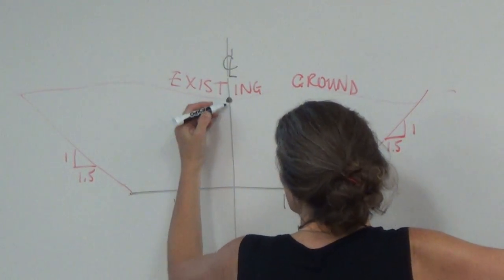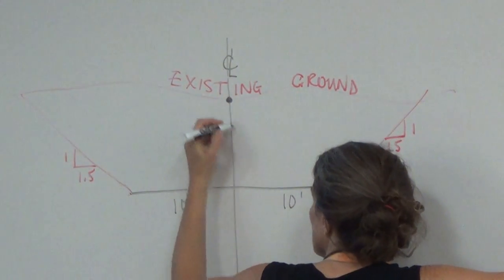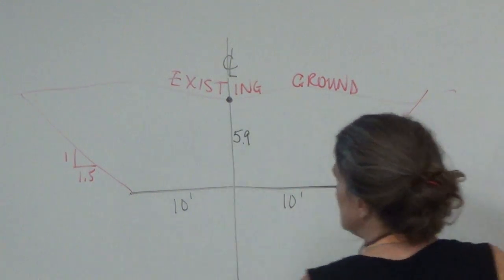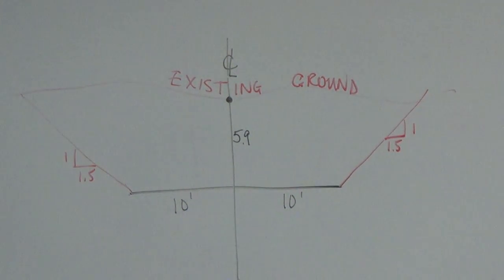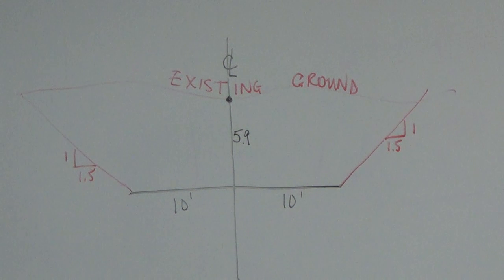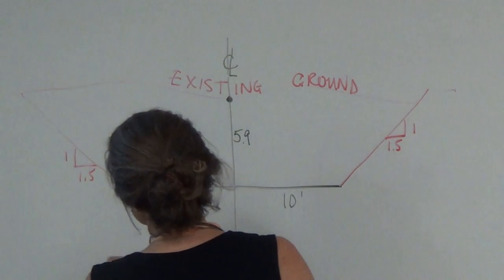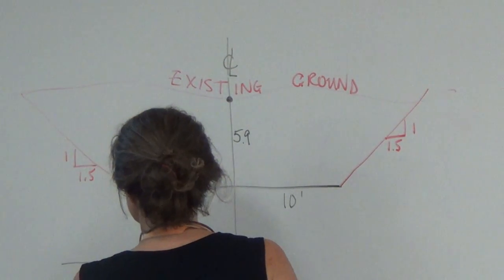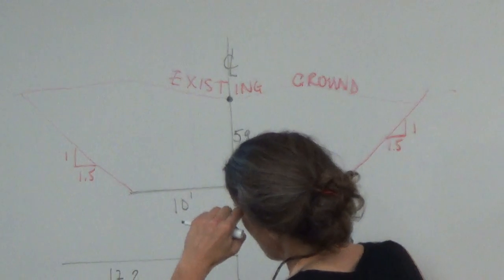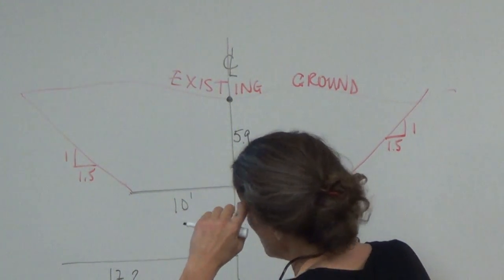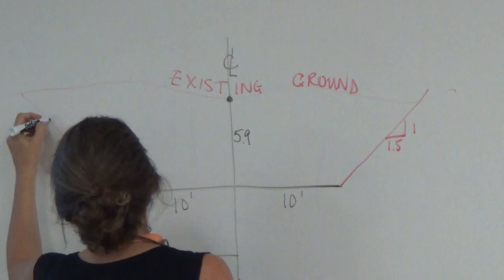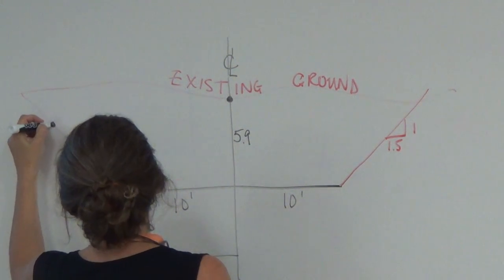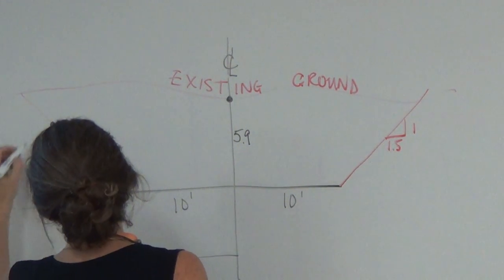So that means, what's this dimension? And then where is the 4.8 over 17.2 going to be? To the left. So it's got to be out 17.2 feet and up 4.8.